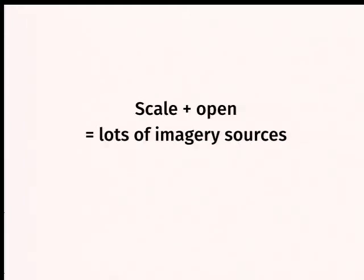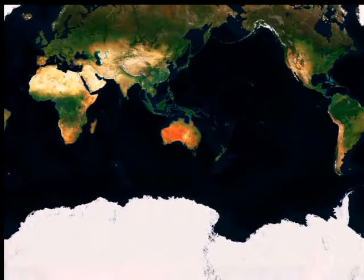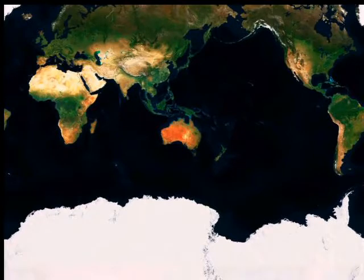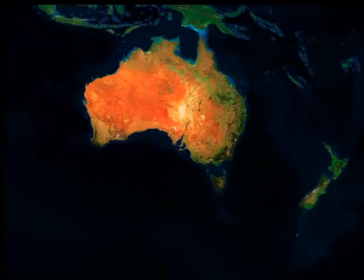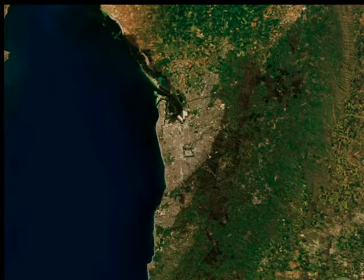So if we're doing this at scale and using open data, we have to work with a lot of different image resources, which means we have fun problems. Out here at low zoom levels, this is NASA data that we downloaded two years' worth of and processed to remove clouds, seams, and all kinds of image artifacts. If we skip a couple of zoom levels and just pop in further — still NASA. This is Landsat from USGS, a satellite system that's been running since the early 70s, collecting scientific data.